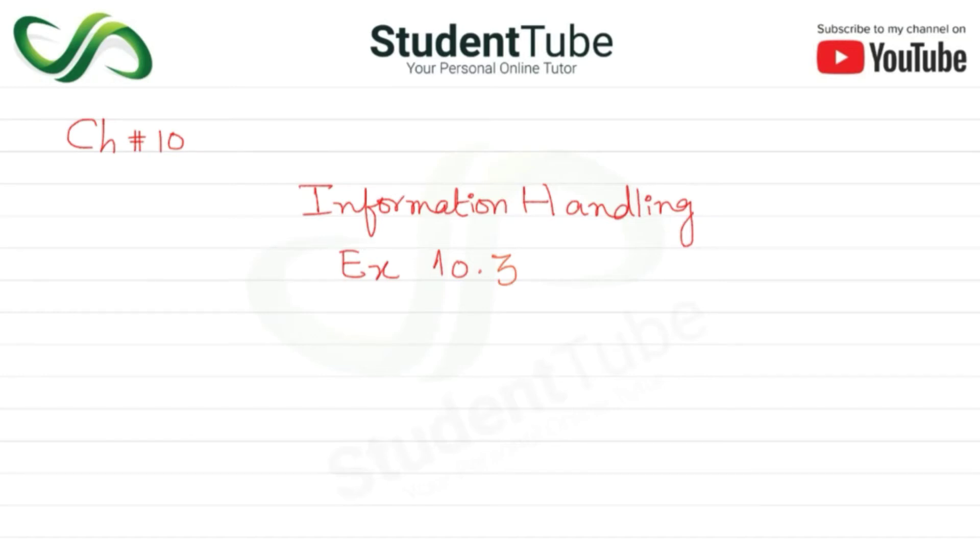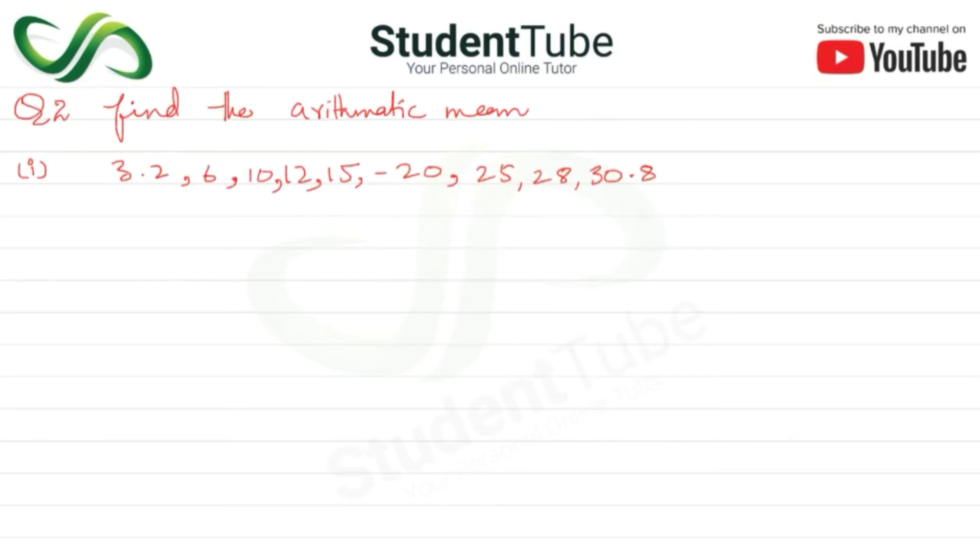Assalamualaikum, welcome to StudentTube. Today's lecture: Chapter 10 Information Handling, Exercise 10.3, Question 2. Find the arithmetic mean. Here the data is ungrouped data. When raw data is given, ungrouped data.